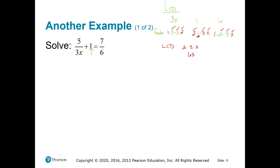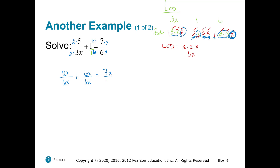We need to make all three of our denominators look the same. My original first denominator was 3x — you ended up multiplying it by 2, which means I'm going to have to multiply top and bottom by 2. Denominator number 2 only had a 1, which means you have to multiply by 2, 3, and x — the entire 6x. Our third denominator already had the 2 and 3, which means we just needed this x. That gives us 10 over 6x plus 6x over 6x equals 7x over 6x.